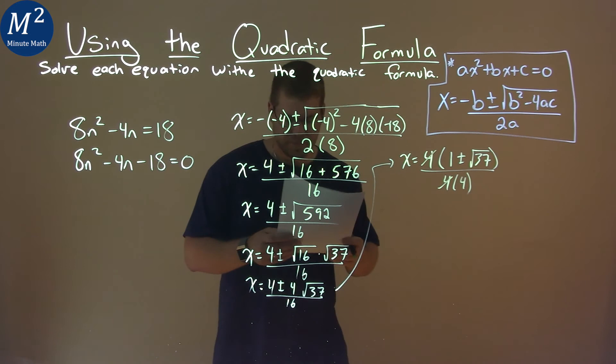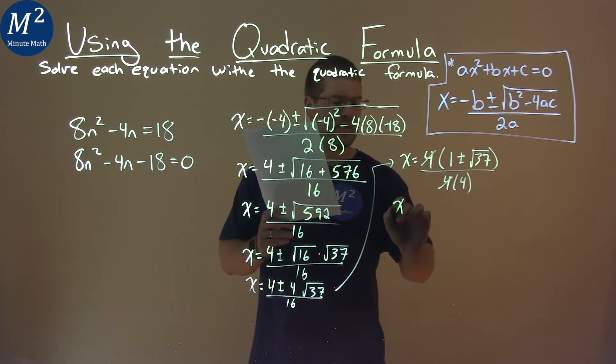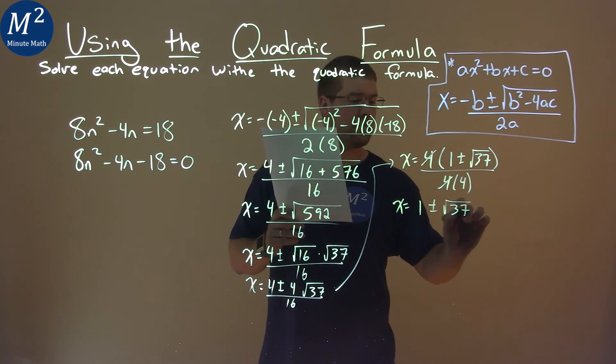These 4s cancel, and that gives us something that's easier to see: x equals 1 plus or minus the square root of 37, over 4.